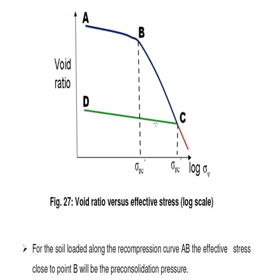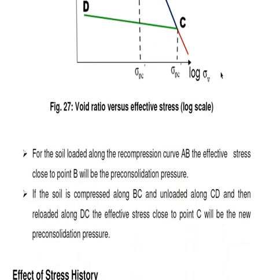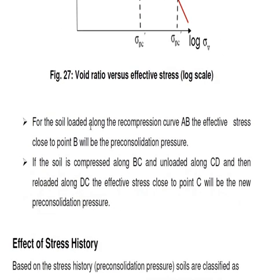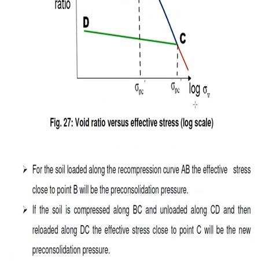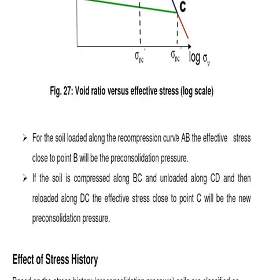After point C, you remove the loading, and from C to D is the expansion part. Just before point C, that particular point is also the Pre-Consolidation Pressure. For soil loaded along the recompression curve A-B, the effective stress close to point B will be the Pre-Consolidation Pressure.